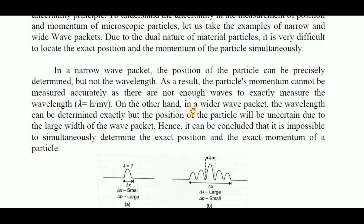On the other hand, in a wider wave packet, the wavelength can be determined exactly. But the position of the particle will be uncertain due to the large width. So we can measure the wavelength — the distance between crest or trough — but we cannot measure the exact position because the space is very large here. Hence, it can be concluded that it is impossible to simultaneously determine the exact position and exact momentum of a particle.